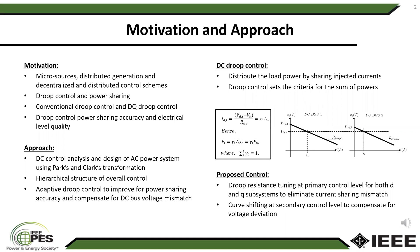Regarding the motivation of this work, with the emergence of micro sources, distributed generation becomes important and subsequently decentralized and distributed control schemes are offered as solutions. Droop control is one of these control schemes, and one of the issues with droop control is power sharing accuracy and also electrical level quality.